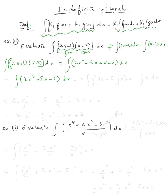Now, using the linearity property to do this in one step, this is the same as: 2 times the integral of x squared dx, minus 5 times the integral of x dx, minus the integral of 3 dx.